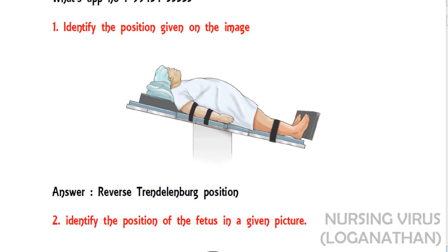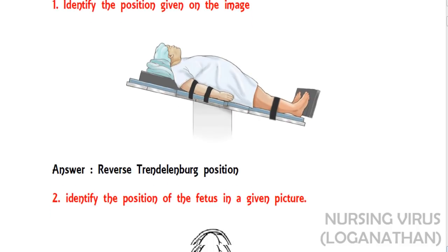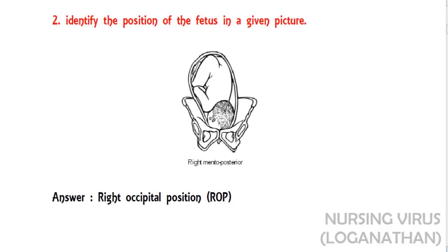The first question: identify the position given in the image — the answer is the reverse Trendelenburg position. The second question: identify the position of the fetus in the given image — the answer is Right Occipital Position, that is ROP.